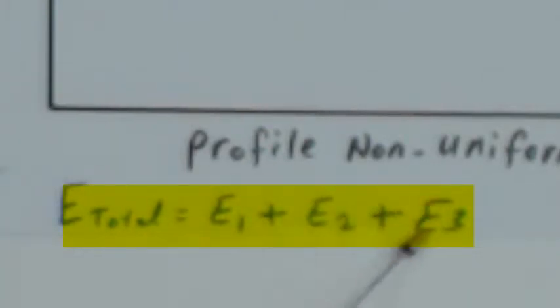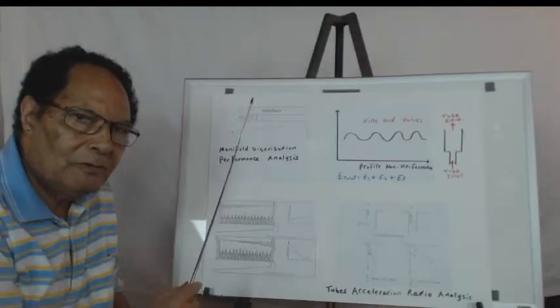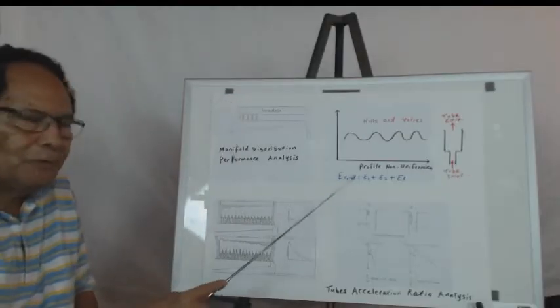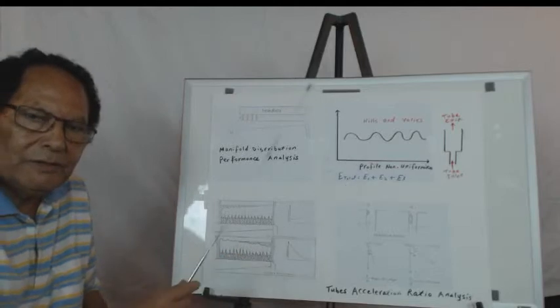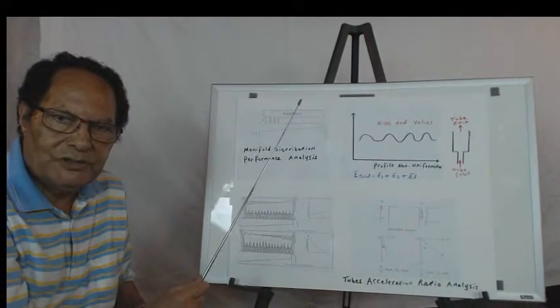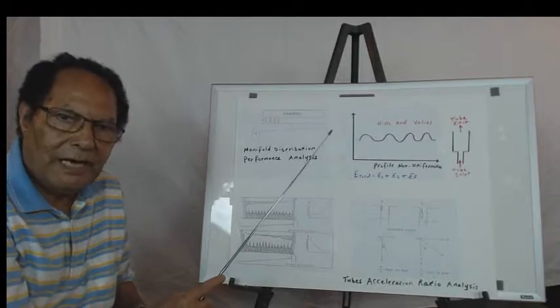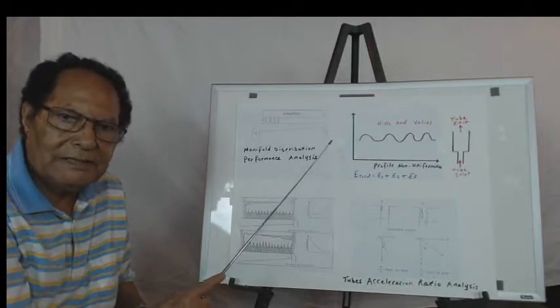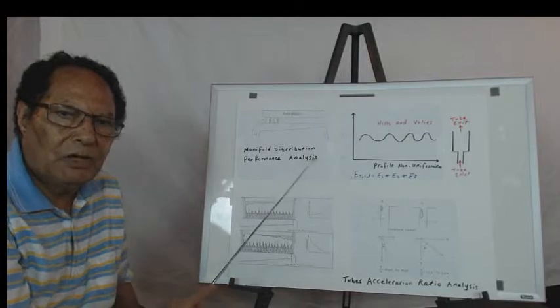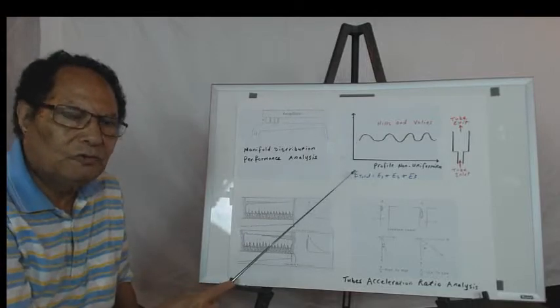The non-uniformity is E total = E1 + E2 + E3. E1: if you have different hole sizes of these tubes, you end up with non-uniformity over here. You might say it's hardly unlikely, but it happens several times during detailed analysis - it's just imperfection of the design. One has to go to the details.